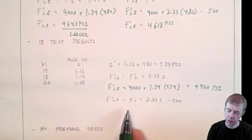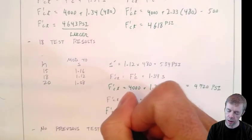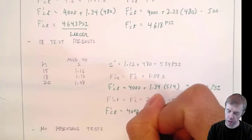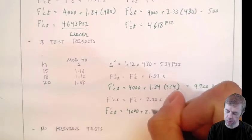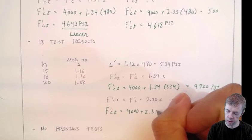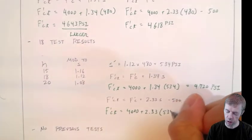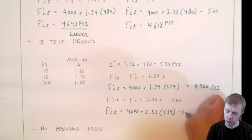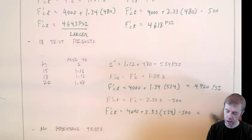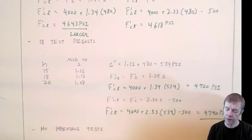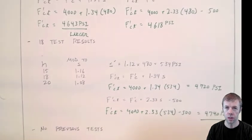Now, let's plug in the other one. 4,000 plus 2.33 times S, which is 534 minus 500. And that's 4,740 psi. Pretty close. That's the one I would use. That's the larger one.